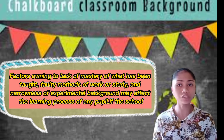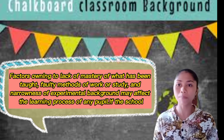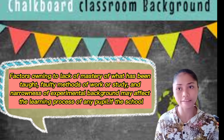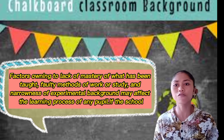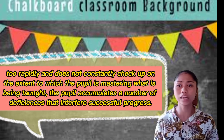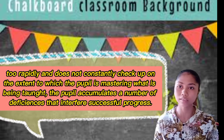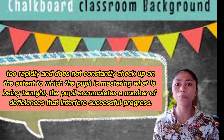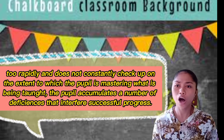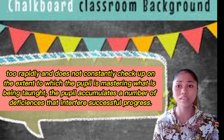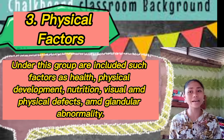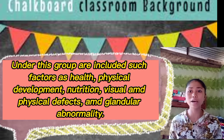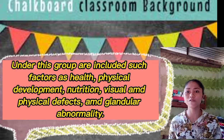Factors owing to lack of mastery of what has been taught, faulty methods of work or study, and lack of experiential background may affect the learning process of any pupil. If the school proceeds too rapidly and does not constantly check on the extent to which the pupil is mastering what is being taught, the pupil accumulates deficiencies that interfere with successful progress. Third is the physical factors, which include health, physical development, nutrition, visual and physical defects, and glandular abnormality.